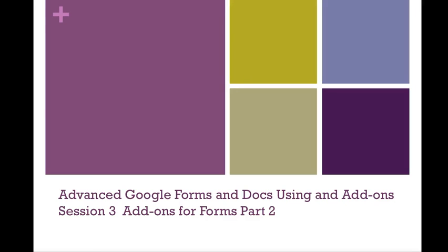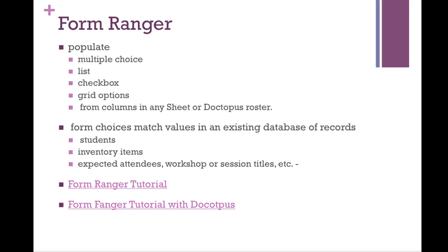Advance Google Forms and Docs using add-ons, session 3, add-ons for forms part 2. The next add-on for forms is called Form Ranger. It allows you to populate multiple choice, list, checkbox, and grid options — all those question types — from columns in a sheet or a Doctopus roster.